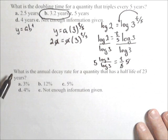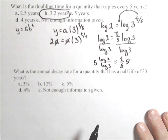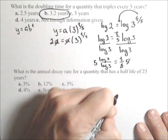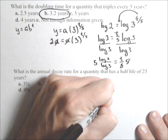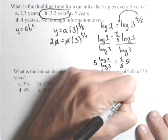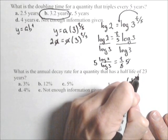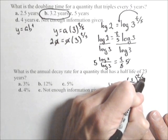In the next problem, we want the annual decay rate for a quantity that has a half-life of 23 years. So, now we have decay instead of growth. The model is going to be set up very similarly. I'm going to have y, my initial. Now, it's half-life, so what happens with half-life is it's getting cut in half every 23 years. So, I raise it to the t over 23.